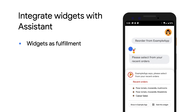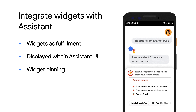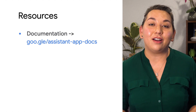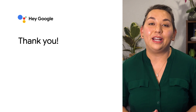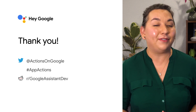Widgets can be used as fulfillment to a user's query. They are ideal for simple answers or brief confirmations, and since they're displayed within the Assistant UI, they can help users discover your widgets. The SDK automatically enables launcher pinning so users will see the 'Add This Widget' button, letting them add it to their home screen. During hands-free contexts, widgets can be surfaced on lock screens and Android Auto. To learn more about App Actions, check out our docs, codelabs, and videos. Join our developer community on Reddit to chat with other App Actions developers, and stay up-to-date by following us on Twitter.